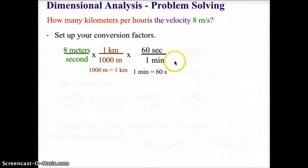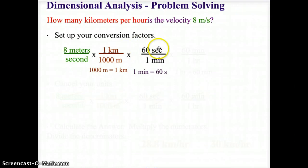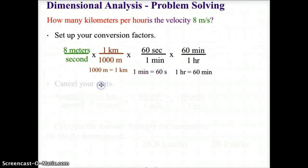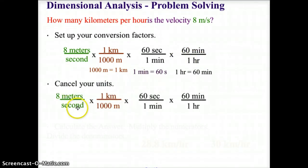There are 60 seconds in one minute, which allows us to cancel seconds. Notice: since seconds is in the denominator in the original quantity, seconds is now on top in the conversion factor in order to cancel it, leaving minutes in the denominator. Then we convert those minutes to hours, putting hours in the denominator because we want kilometers per hour.